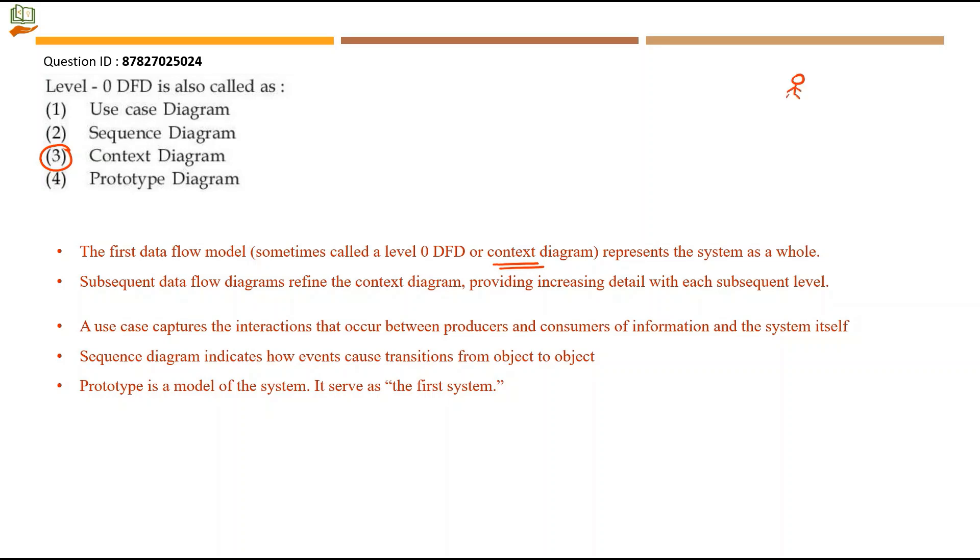You will have math stick called as actors and there will be use cases - what are the activities that this actor will do? Sequence diagram indicates how events cause transitions from object to object. Even in some PYQs we have seen - here some object will be there, here one object will be there. From here there will be some interactions. The interaction will occur from this object to that object. We have also solved certain problems in sequence diagram.